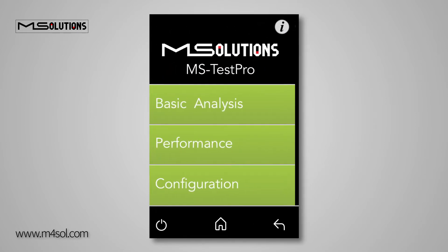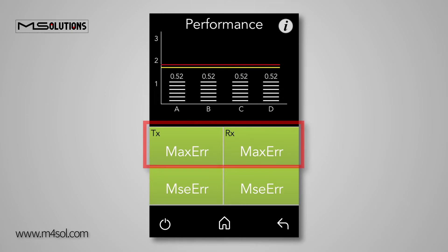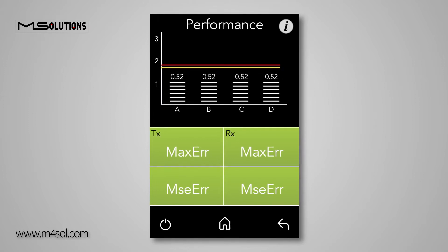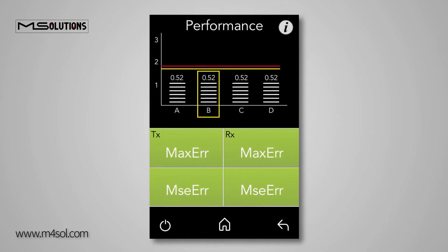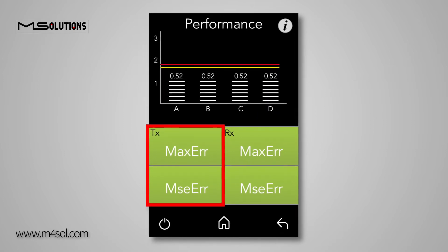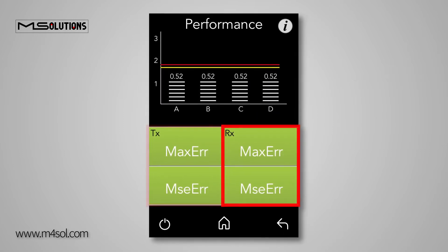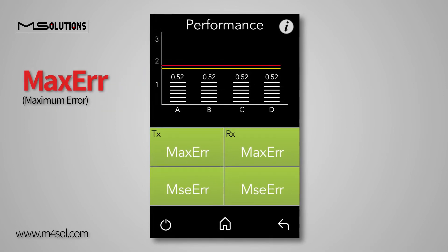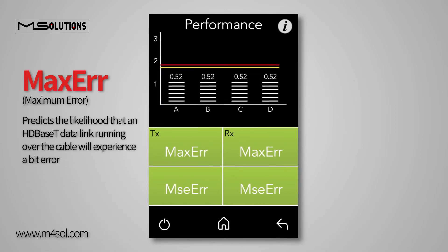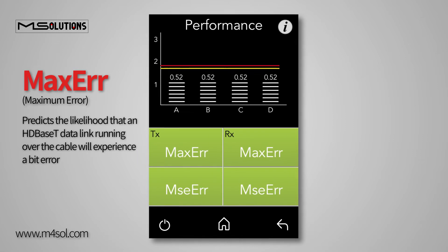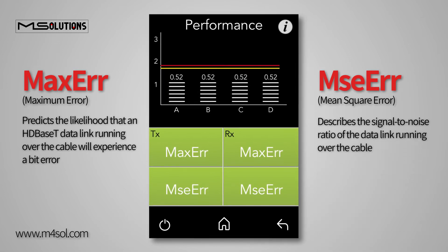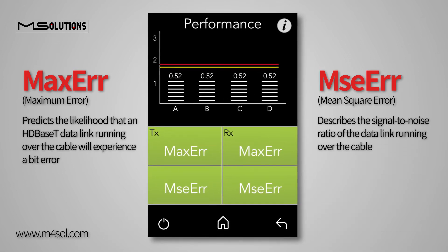If we go back to the HDBaseT Analyzer menu and select Performance, we can access more detailed information. On this screen, there are four columns, each representing a wire pair in your HDBaseT cable: A, B, C, and D. Transmit or TX functions are available on the left side, while Receive or RX functions are available on the right. Each side offers Max Error and MSE Error buttons. Max Error, or Maximum Error, predicts the likelihood that an HDBaseT data link running over the cable will experience a bit error. MSE Error, or Mean Square Error, describes the signal-to-noise ratio of the data link running over the cable.